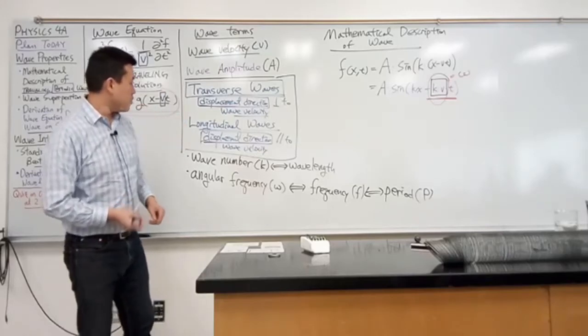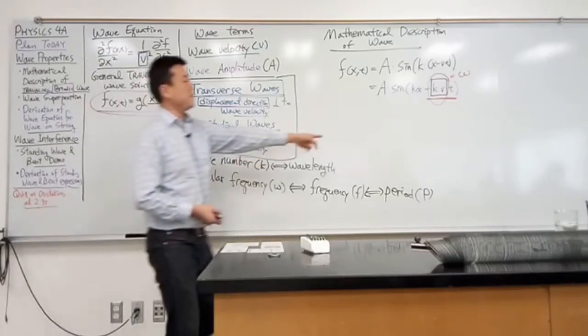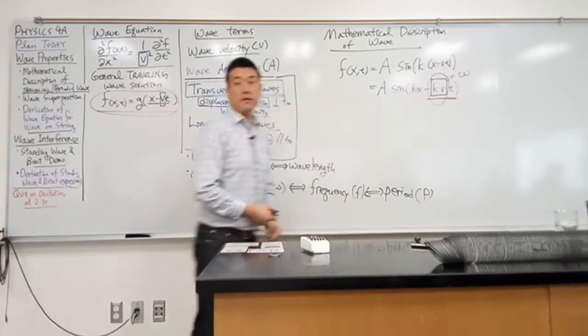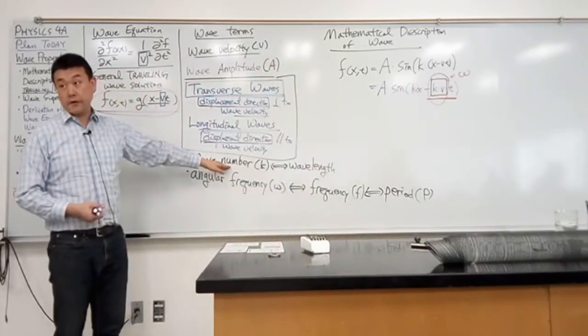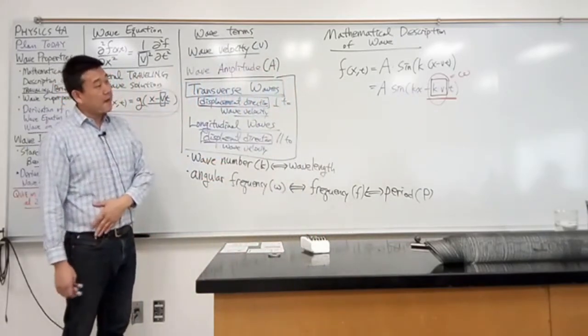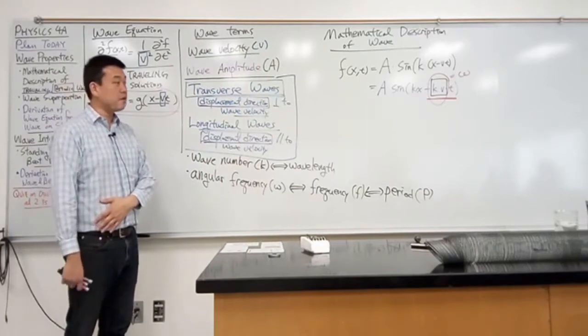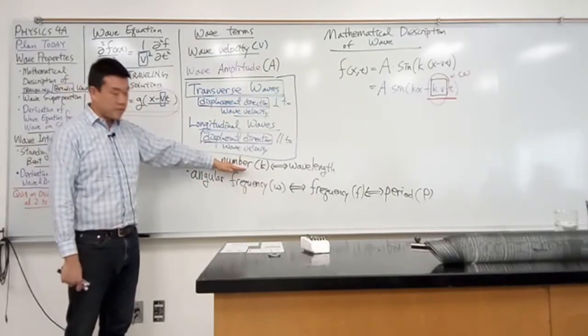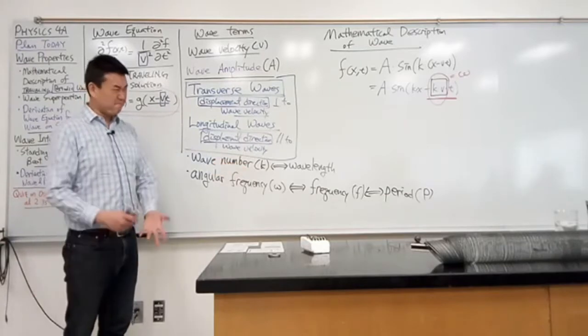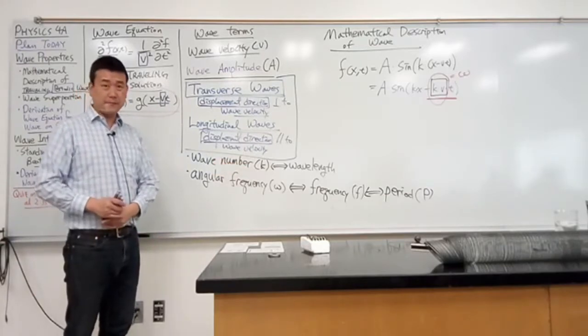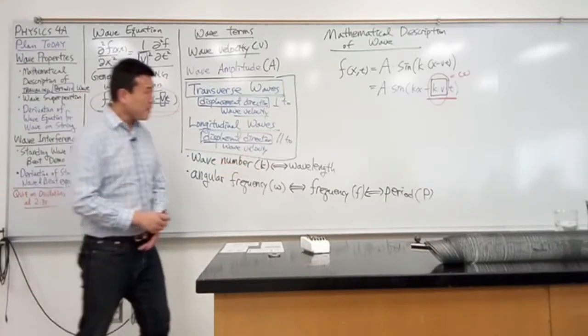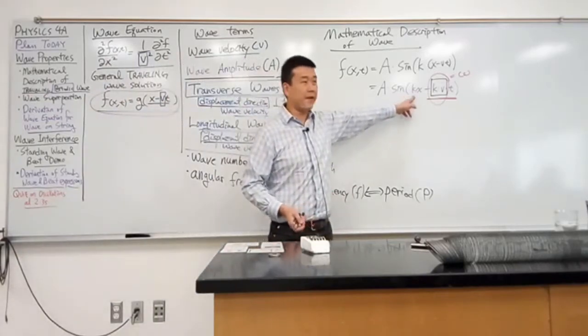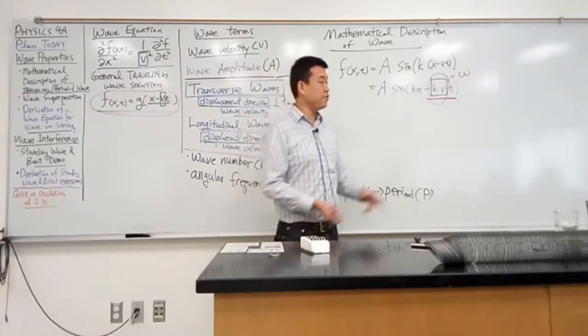Let me write down one more thing. So I said this constant k here, that's something called a wave number. If you're trying to write down a simple looking expression, wave number is actually the most useful quantity to work with. But it's not the most intuitive quantity. For one, any guesses what the unit of k is? What should be the unit of k?